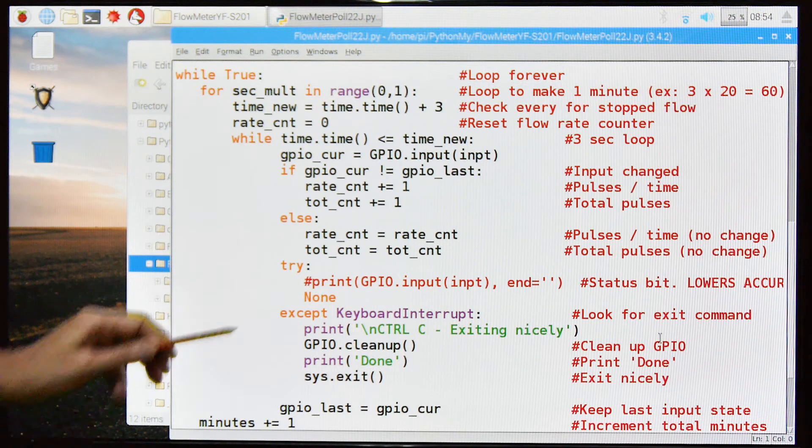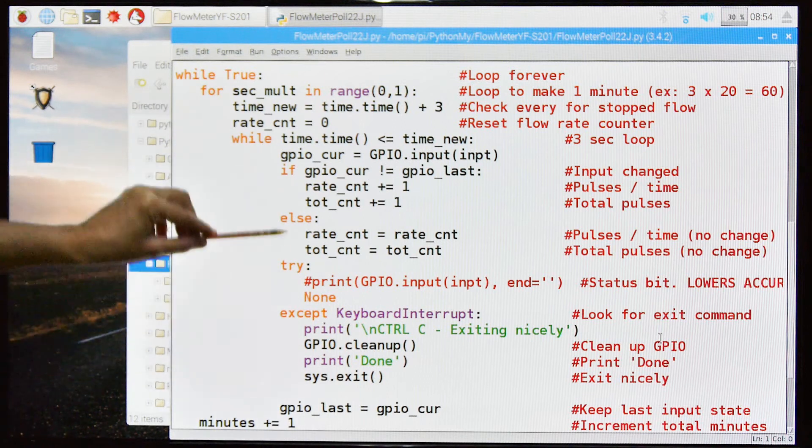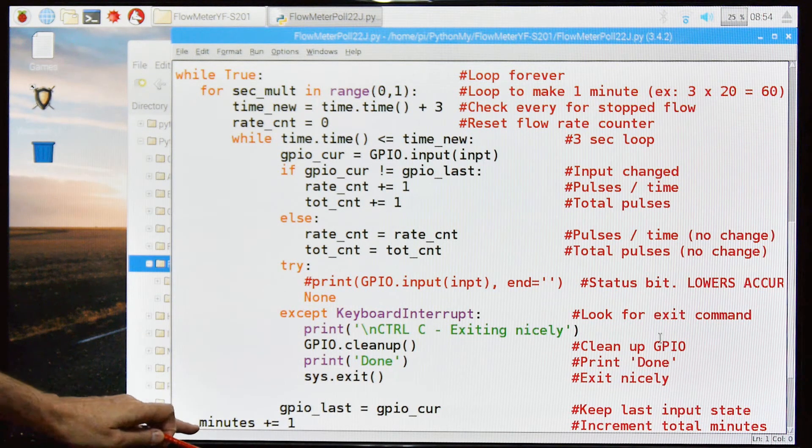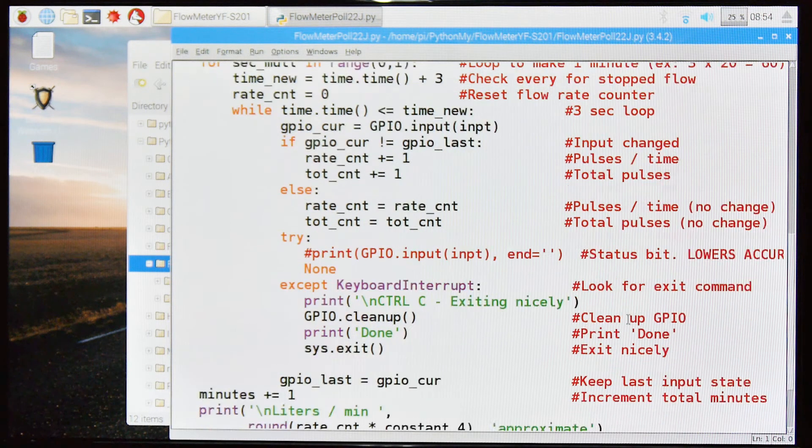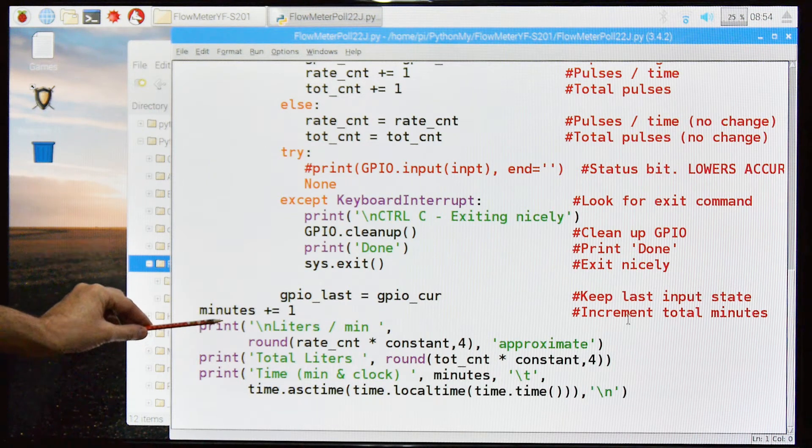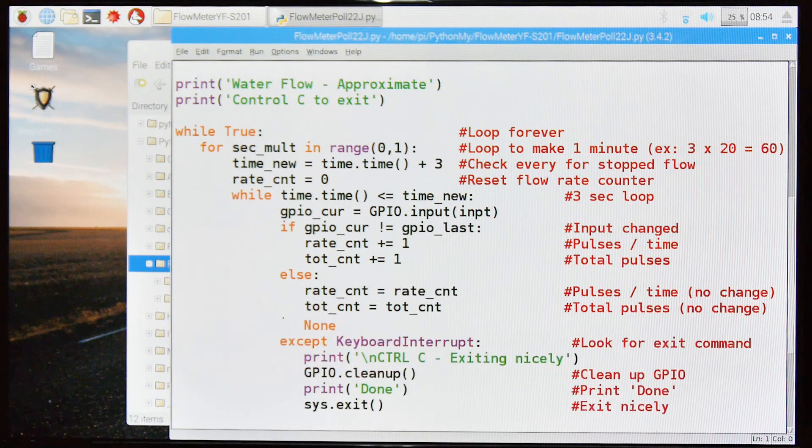Okay, where was I? So we're going to repeat this part of the loop for the timing and when we reach our time then we'll go down, we'll fall through, we'll increment the minutes. We'll print out our information and then we'll go back up here and we'll repeat the whole thing again and we'll do that forever.